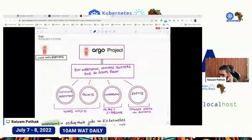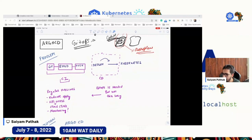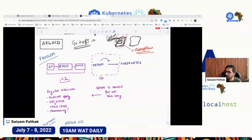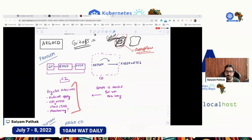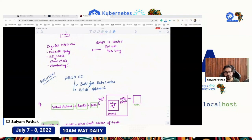The problem Argo CD solves is clear. You can build and push in a CI pipeline, but what about deployment? You can't use the same CI pipelines to deploy to Kubernetes — how do you get the deployment status? How do you manage revisions and rollbacks? Does it notify you when something goes wrong? None of that is part of CI. For deployment, GitOps is needed, and you can't do that with regular pipelines, kubectl apply, and custom scripts. That's why Argo CD exists — one of the most popular solutions out there.